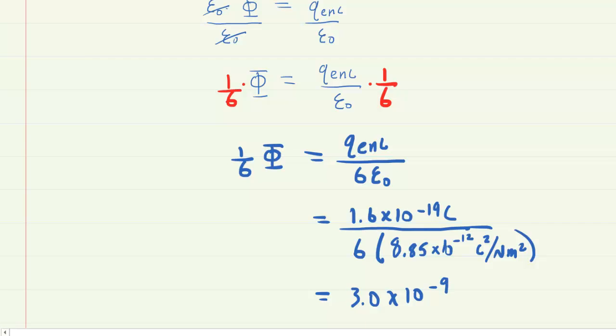And then if we look at the units carefully, we have coulombs divided by coulombs squared over newton meters squared. And to simplify that, we would do keep, change, flip. So keep the coulombs in the numerator, change to multiplication, and then flip the fraction that's in the denominator. And when we do that, the coulombs would cancel, and we would be left with newton meters squared per coulomb.